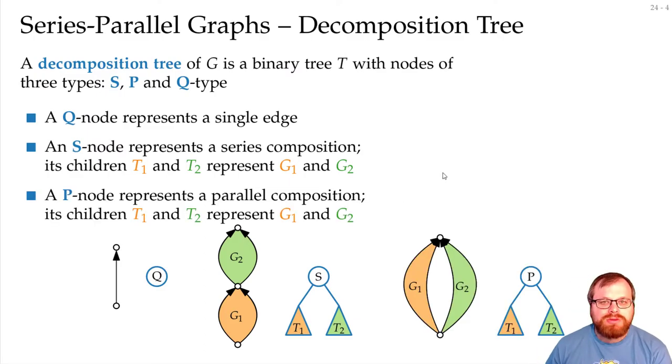And a P node represents a parallel composition. It has two children, they represent the graphs G1 and G2, who we merge together here to form the larger graph.